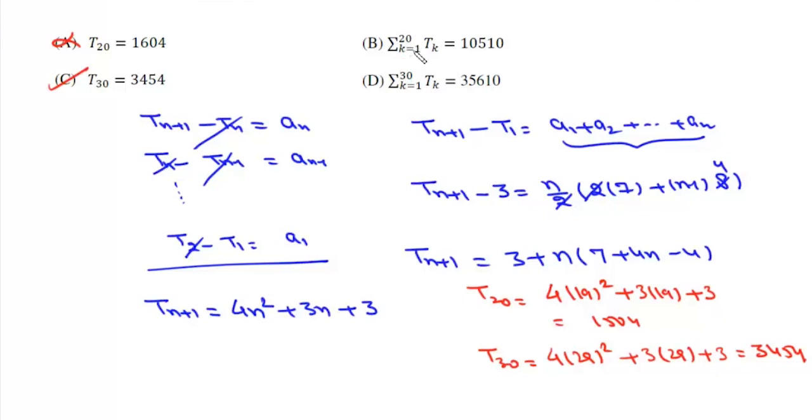Now we have to find this summation where k varies from 1 to 20 and 1 to 30. So we have to simplify this: summation from k=1 to N of Tₖ, which is T₁ + T₂ + ... + Tₙ.